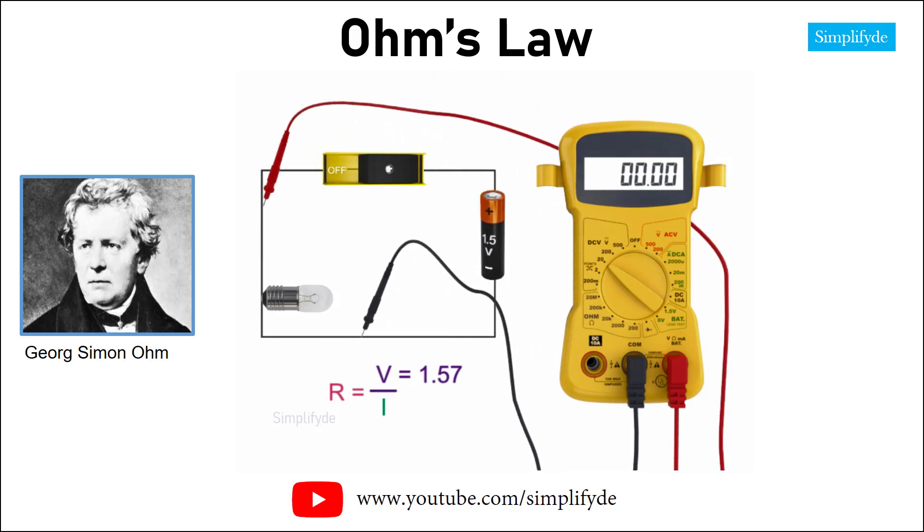This is expected, as the light bulb, which is the load in this circuit, only has a voltage across it if a current is present.